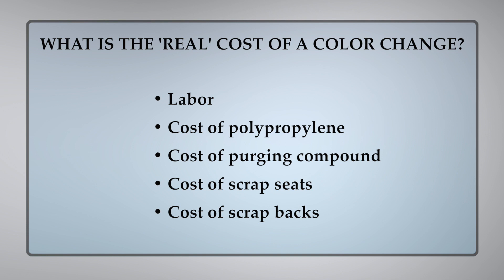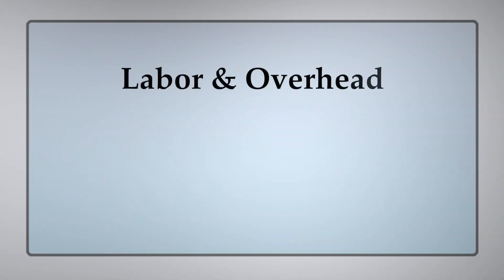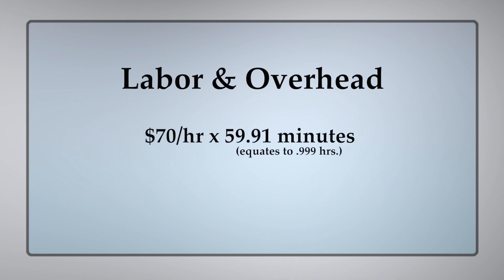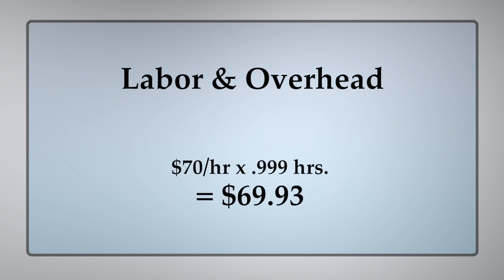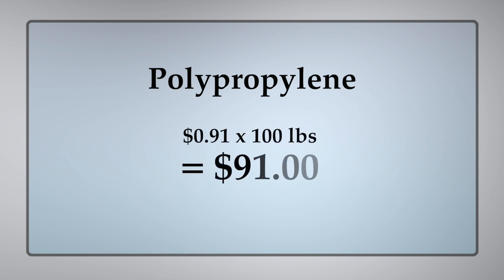When we are doing a color changeover, you can think of this as similar to pushing different colors of clay through toy clay presses that kids use. Labor and overhead costs are indirect and fixed costs associated with running a business. Our labor and overhead rate is roughly about $70 per hour. So labor and overhead cost for color changes: $70 an hour times 59.91 minutes, which is really 0.999 hours — so $70 times 0.999 hours equals $69.93. Since we have two changeovers per chair, we multiply by two to get $139.86. The polypropylene cost is $0.91 per pound and we go through an average of about 100 pounds, so that's $91. Again, we multiply by two to get $182.